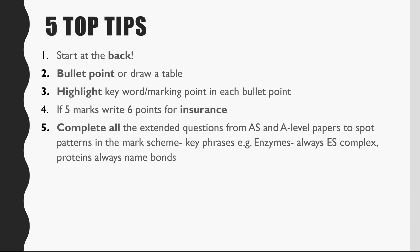The next tip: bullet point or draw a table. You don't have to write continuous prose and long paragraphs in any question on an AQA paper except for the essay. Make it easier for yourself and the examiner — so they don't miss-mark your paper — by bullet pointing your answer or drawing a table. This also helps you make sure you've not missed any points. Highlight what you think is a key word or marking point in each bullet point or table section. Since you're not allowed to use highlighters in an exam, you can write in capital letters or underline it instead.